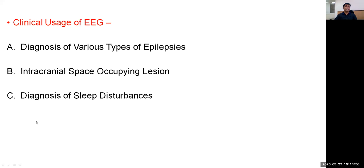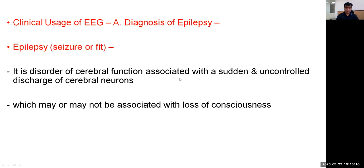Regarding the uses of EEG: the electroencephalogram is used in the diagnosis of various types of epilepsies, intracranial space-occupying lesions, and sleep disorders. Regarding the role of EEG in diagnosis of epilepsy: epilepsy, also called seizure, is a disorder of cerebral function associated with sudden and uncontrolled discharge of cerebral neurons, which may or may not be associated with loss of consciousness.